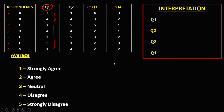The average for question number 1 is 3.29. Then for question number 2, add all these numbers and divide by 7 — the average is 3.71. For question number 3, add all these numbers, divide by 7, and the average is 3.00.